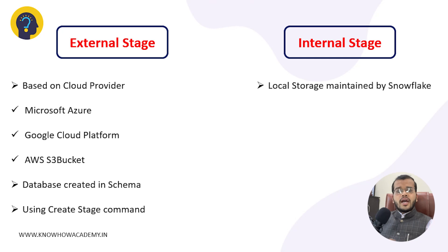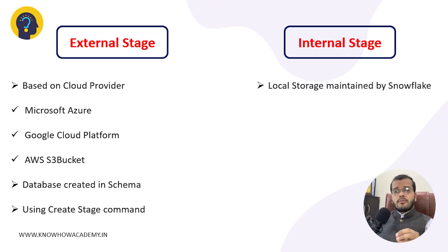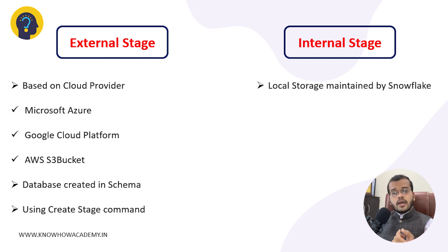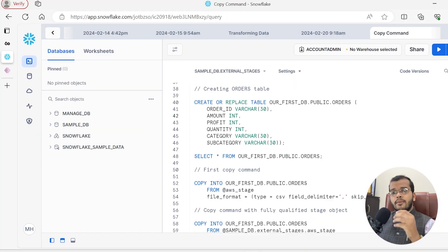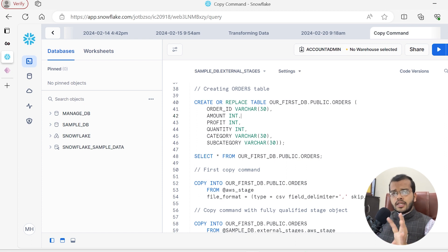There are two types of stages: we have external stage and internal stage. Internal stage is the one that we have on-premises on local machine. When talking about external stage, we can get it from cloud providers such as Microsoft Azure, Google Cloud Platform, and AWS where we use S3 bucket, from Microsoft Azure we use blob storage. In my previous videos, I showed you how to create this external stage using a CREATE command.